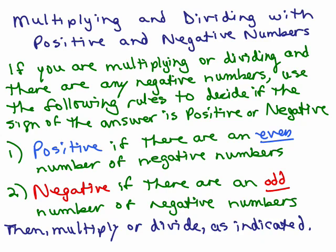If you're working with all positive numbers, it's really nothing new. But if you're multiplying or dividing and there are any negative numbers, use the following rules to decide if the sign — that means whether it's positive or negative — of the answer is positive or negative. The answer will be positive if there are an even number of negative numbers, and the answer will be negative if there are an odd number of negative numbers.